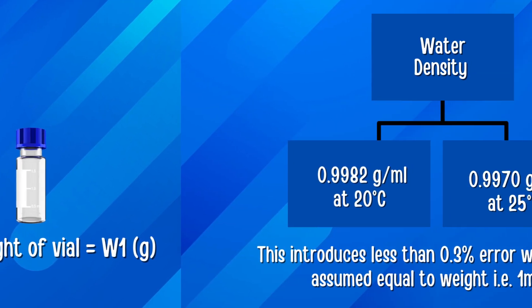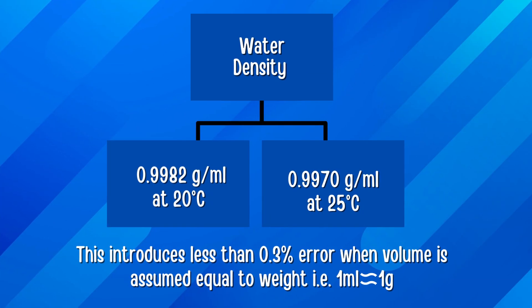Water is used for injection volume accuracy test as its density is 0.982 g per ml at 20°C and 0.970 g per ml at 25°C. This introduces less than 0.3% error when volume is assumed equal to weight.